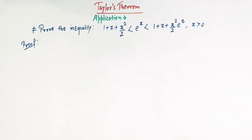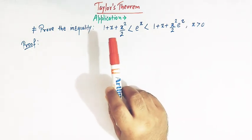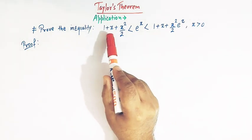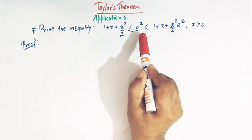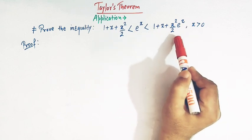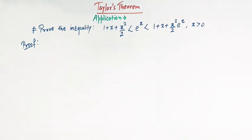Hello viewers! In today's class we are going to discuss one important application of Taylor's theorem. Here we'll prove the inequality: 1 + x + x²/2 < eˣ < (1 + x + x²/2)·eˣ for all x > 0, using Taylor's theorem.